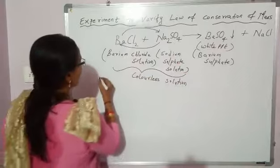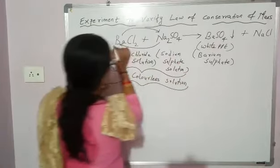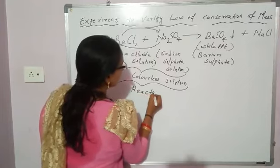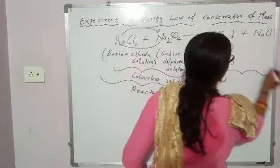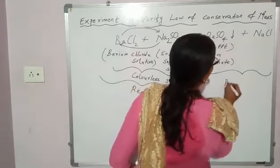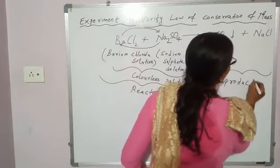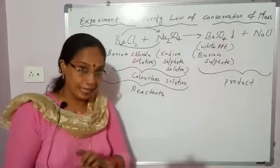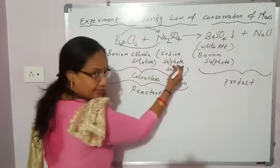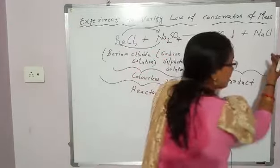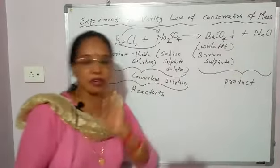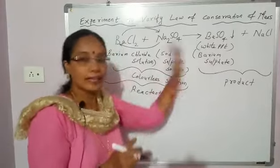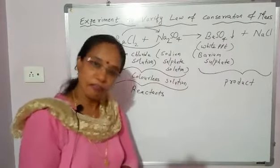In this reaction, the reactants are barium chloride and sodium sulfate. The products are barium sulfate and sodium chloride. Now we have to verify the law of conservation of mass, meaning the total mass of reactants is equal to the total mass of products. I will show you how to verify this experiment.